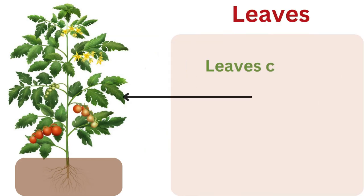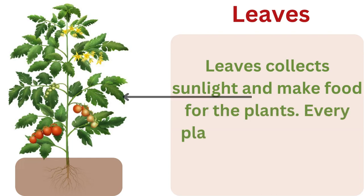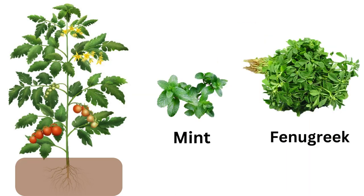Parts of the plant are delicious. Leaves collect sunlight and make food for the plant. Every plant has a different kind of leaf. Some examples of leaves we eat are mint and fenugreek leaves.